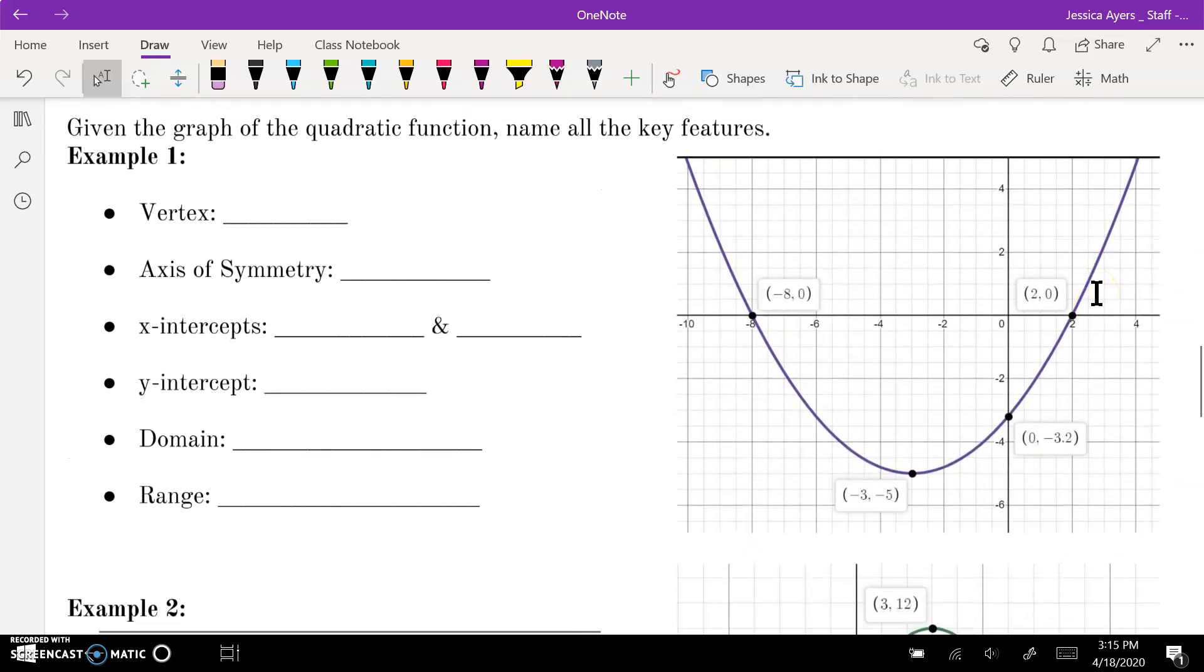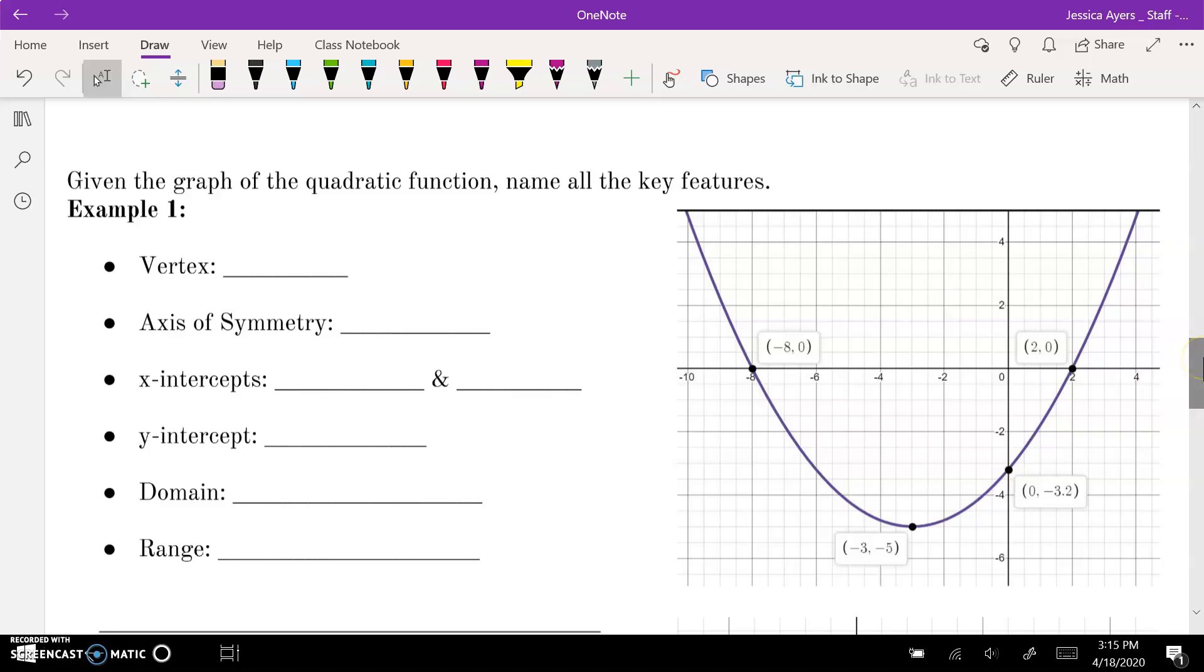We can look at these examples and talk this out again. So remember, I'm going to color code each of these. The vertex is this point here. So it's the point negative three, negative five. So you want to make sure that you find the vertex. It's the point that's not repeating, lowest point, highest point, the turning point, however you want to think about it. That's your vertex.